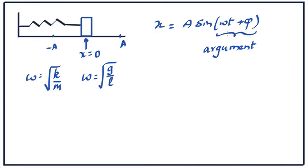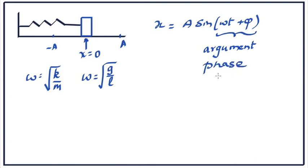For now, let's keep looking at this argument. When the argument is pi by 4, sine pi by 4 is 1 by root 2, so x is equal to A by root 2 — it is passing through that point. When the argument is pi by 6, sine pi by 6 — that is sine 30 degrees — is half; it's passing through the midway point between equilibrium and the maximum. So which part of the oscillation it is at is determined by the argument of the sine function. It's got a name — we call it phase, or phase angle.